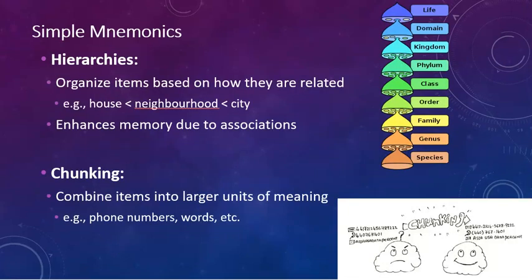So again, we're going to talk about some of these simple mnemonic devices. The first one would be hierarchies. So being able to organize items based on how they're related will help us enhance our memory due to the association. So we're giving items a relationship to one another to help us remember things. So an example would be that your house is in a neighborhood, which is in a city. So a city is bigger than a neighborhood, which is bigger than a house. So we're kind of putting things in order based on size here. Or another example would be when we're talking about the tree of life. Then we've got all life, we've got the domain, kingdom, phylum, class, order, family, genus, species. So we learn the order of things to help us remember them because using hierarchies can help.